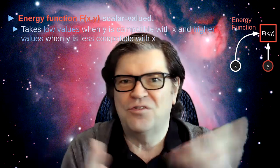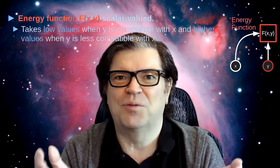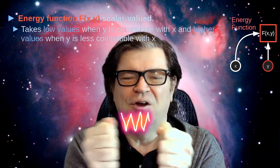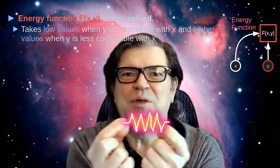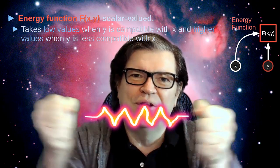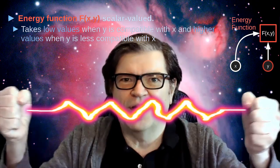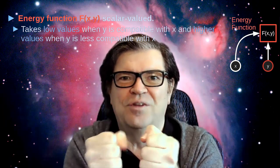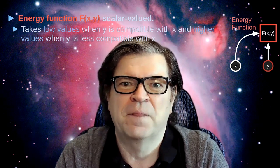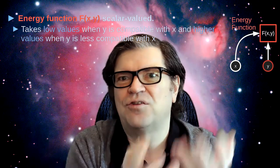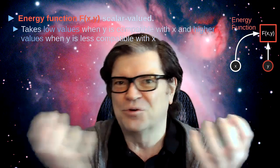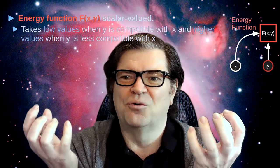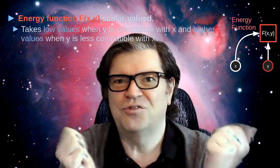It's called an energy because it's very similar to the physical concept of energy. If you have a rubber band, low energy is when the two ends are happy with each other — you satisfy the constraint. When you start stretching the rubber band, you have high potential energy and it wants to come back to its rest position. So y and x can be thought of as physical properties, and for y to be compatible with x, it has to change so that the energy is small.